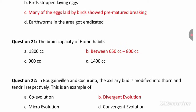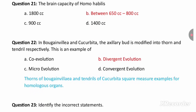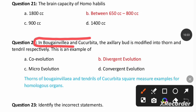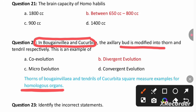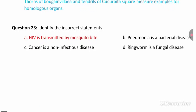The brain capacity of Homo habilis is 650 to 800 cc. Bougainvillea and Cucurbita are examples of homologous organs — the axillary bud is modified into thorns and tendrils respectively. This is an example of divergent evolution, because homologous organs are responsible for divergent evolution.